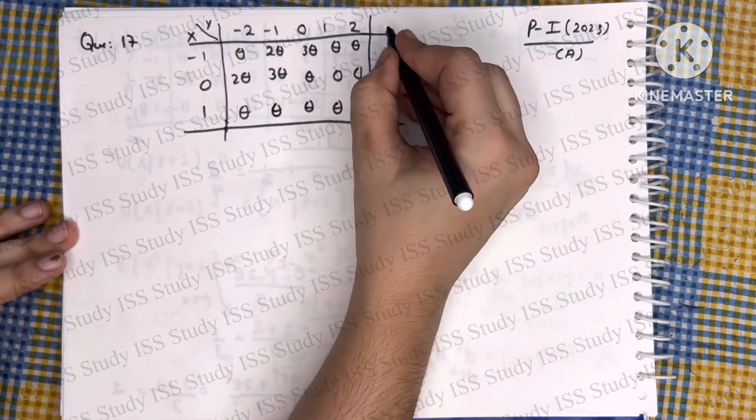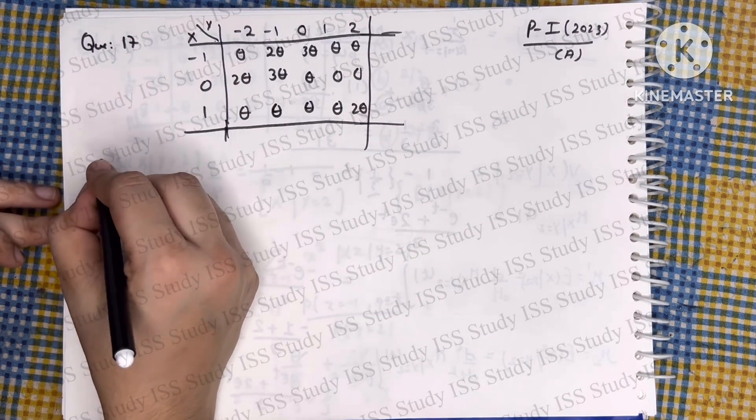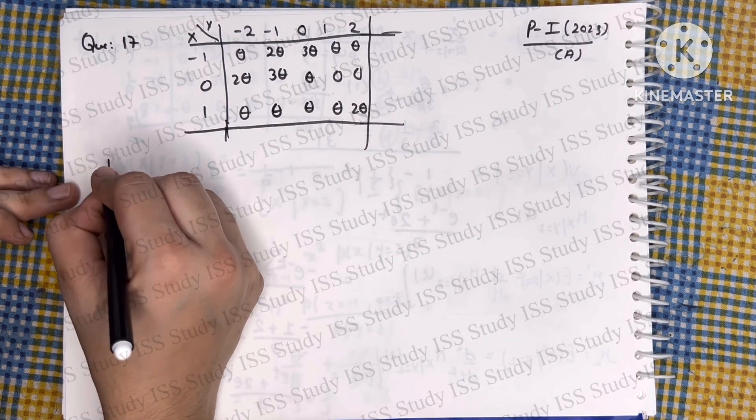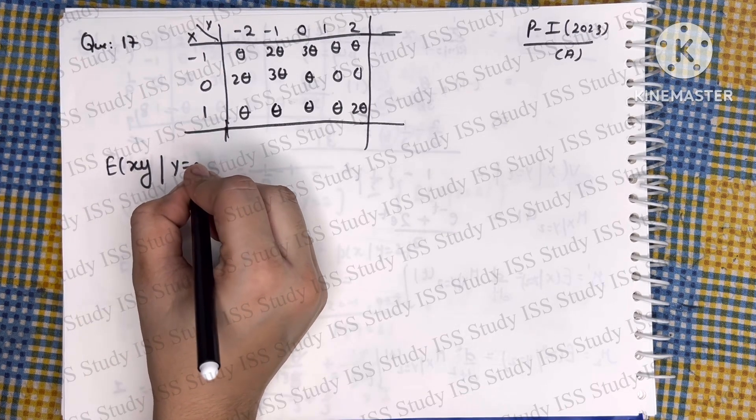Later on if required we will find the marginals. In this question number 17 we have to find the value of expectation of XY given Y equals 2.